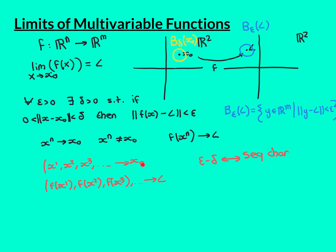We now want to show that the sequence characterisation holds true. So let's take a domain sequence that converges to x0 when none of the terms are equal to x0 itself. Let's take its image sequence — we take each one of these vectors, map them according to the function f, and create this image sequence. The bit we need to prove is that the image sequence converges to the limit vector L; this is a vector sequence.